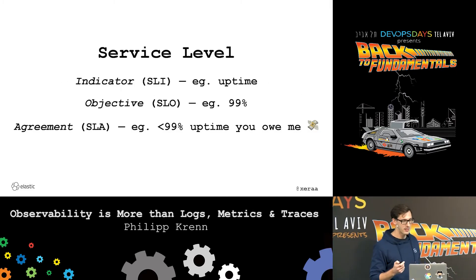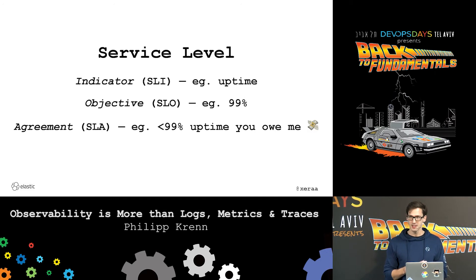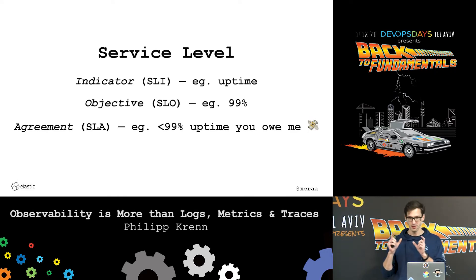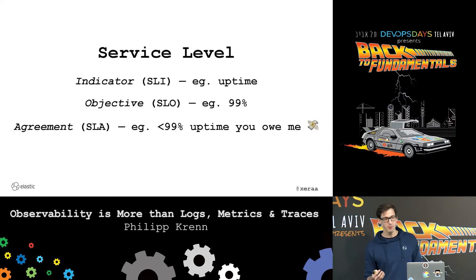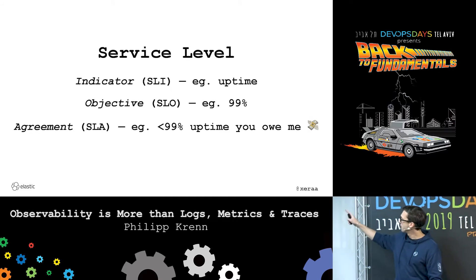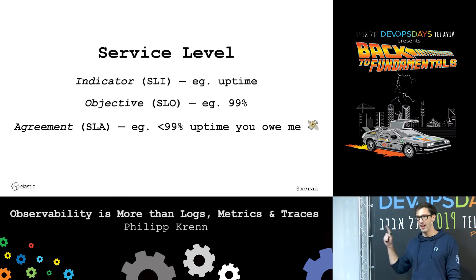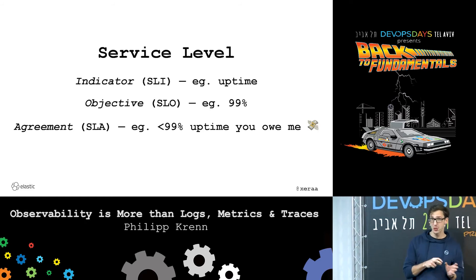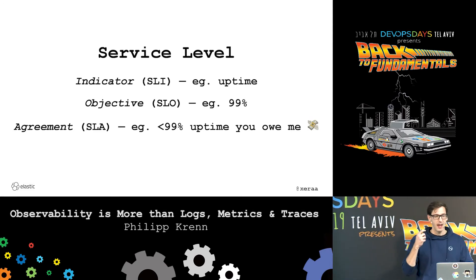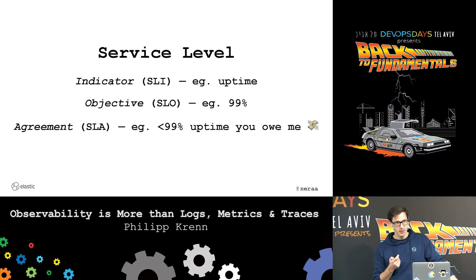I guess everybody is aware of SLIs, SLOs, and SLAs. The indicators are, for example, uptime — something your users probably care about. Objectives are where you guarantee your uptime for your service to be, like, 99%. And then you have the agreement where you basically guarantee to somebody that if your uptime is below that objective, you owe them money. And that's how you get stable systems, both internally in your company but also to guarantee to outsiders. This is really something that you want to get with observability.